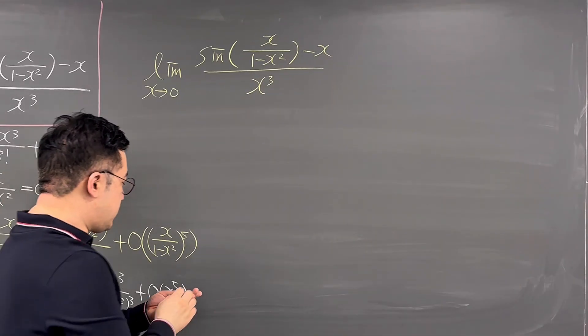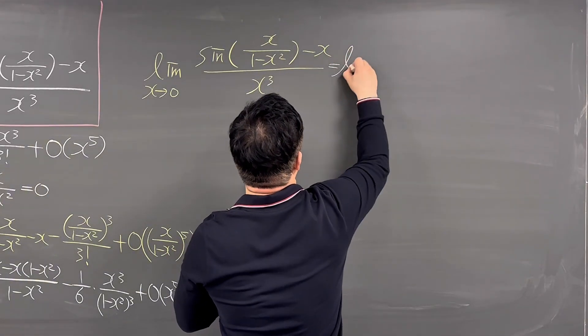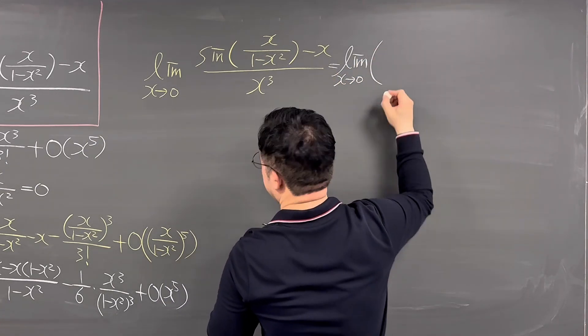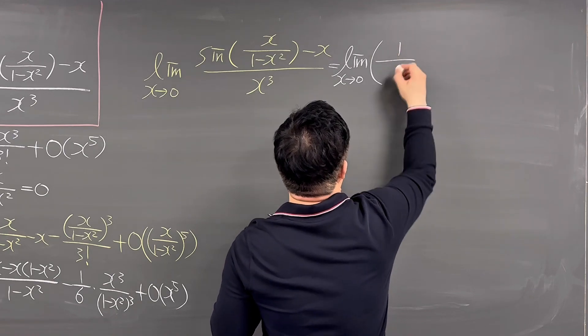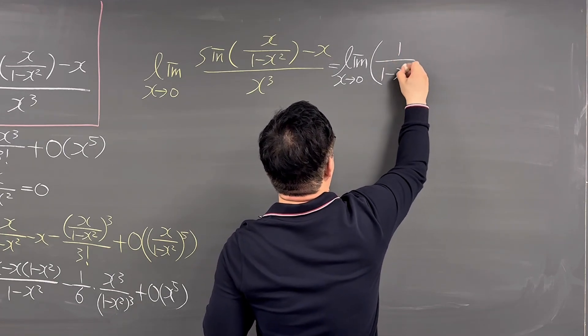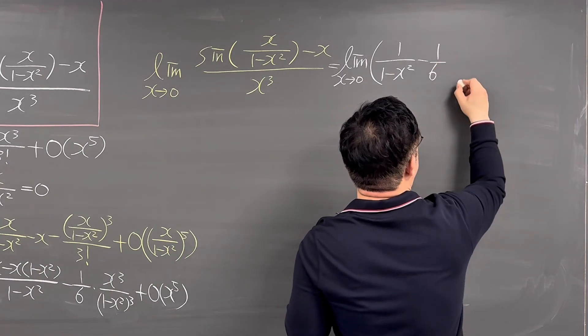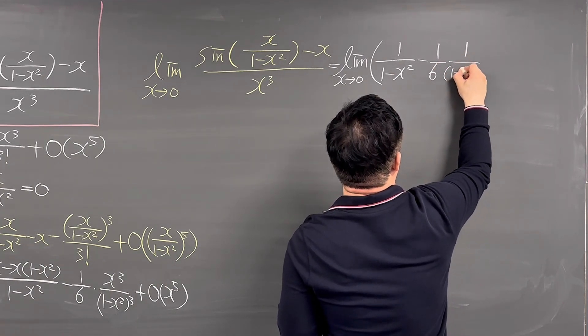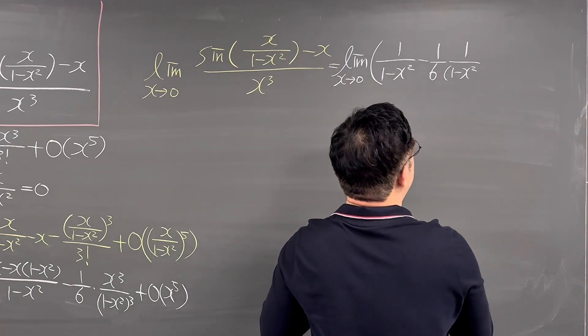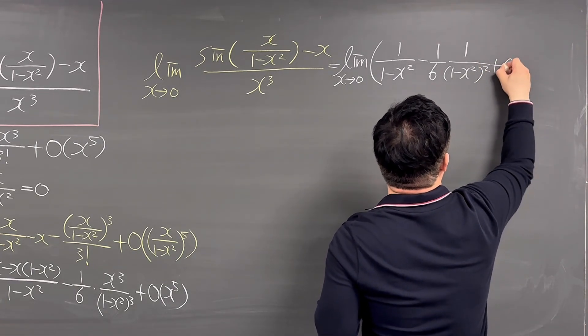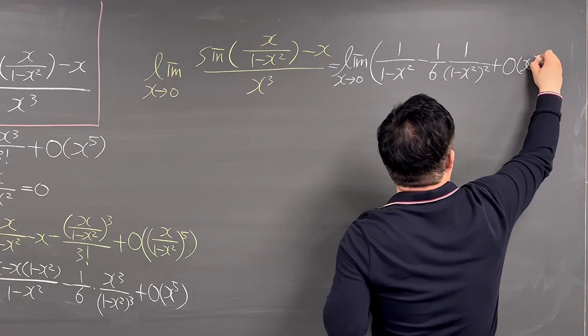Okay, then this is going to be just the same as limit X is going to 0 still. And we have 1 over 1 minus X squared, and then that minus 1 over 6 times 1 over 1 minus X squared, entire thing squared, and that plus the big O of X to the power of 5.